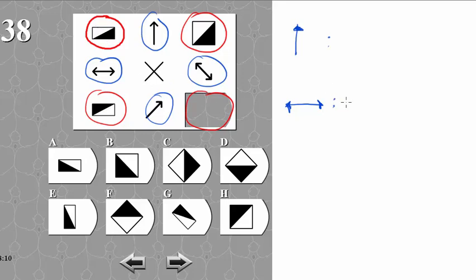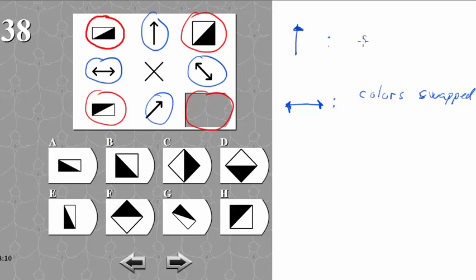So it seems like the double arrow will make the colors swapped. The single arrow takes a narrow rectangle, a thin rectangle, and turns it into a square. So we can express it as: it squares things.